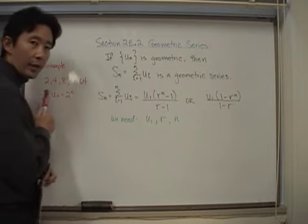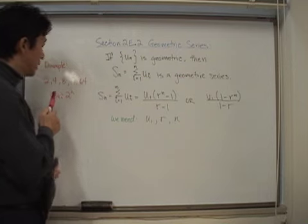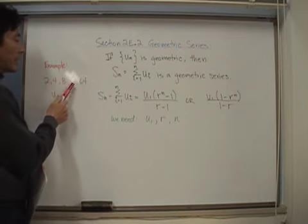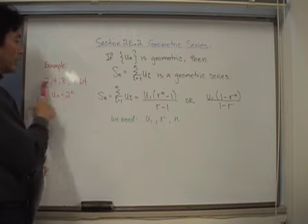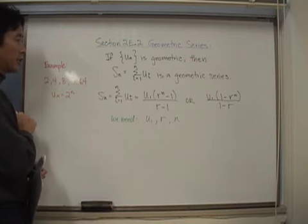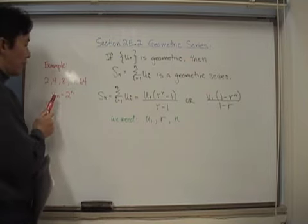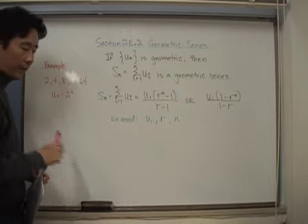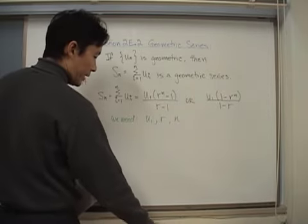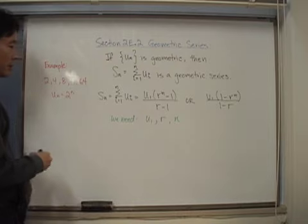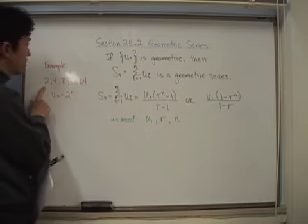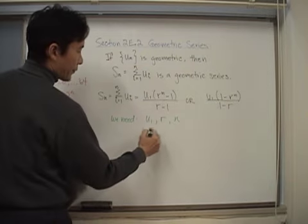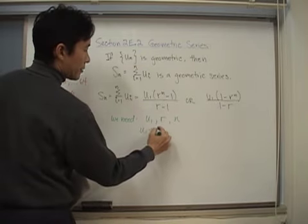Let's go ahead and take a look at an example. Let's say for example that our geometric sequence is 2, 4, 8, dot dot dot, 64. So we know just by looking at this that the geometric sequence can be u sub n equals 2 to the n. So given that, do we know what u sub 1 is? Well sure we do. It's when n equals 1 and that's going to be a value of 2. So we know that u sub 1 equals 2.